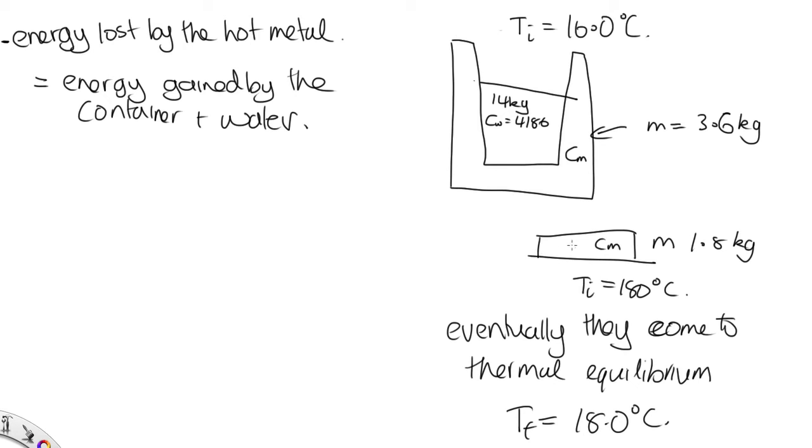So how much energy is this hunk of metal losing? Well, it's losing the mass of the rod times the heat capacity of metal times the change in temperature, which is temperature final minus temperature initial for this rod.